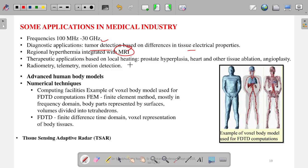Then MRI—magnetic resonance imaging. There is a huge machine; people go inside that and then detailed image comes out. Next, there are applications based on local heating: heart and other tissue ablation, angioplasty and all those medical things. Radiometry, telemetry and motion detection are also used here. If a person is in coma, a small movement in hand is very significant which may or may not be detected by camera, but microwave things can detect that.